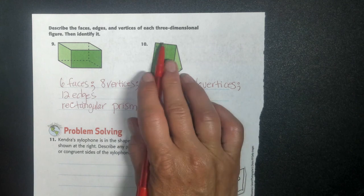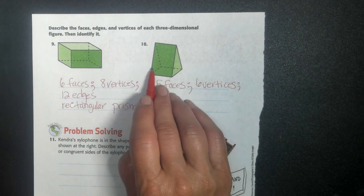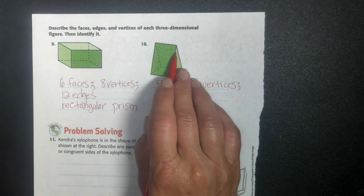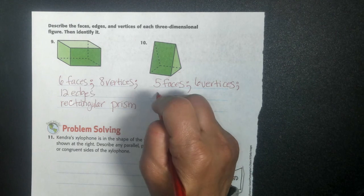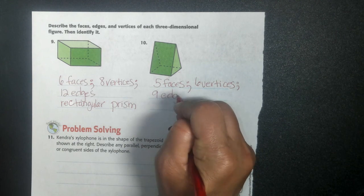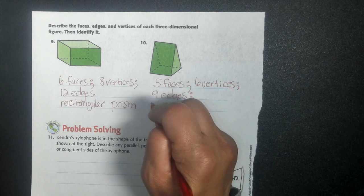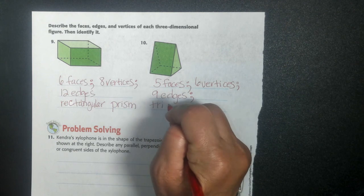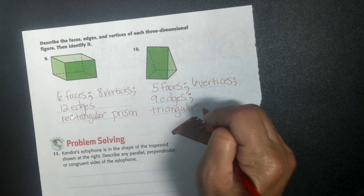So one, two, one in the back, three, and then four, five, six on this side, and then seven, eight, nine, and nine edges. And hopefully you can see that this is a triangle. So I'm going to call this a triangular prism.